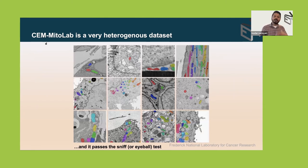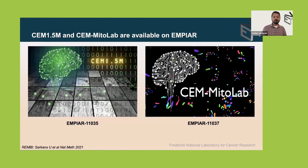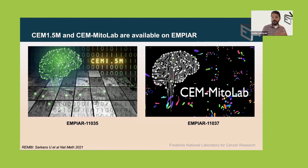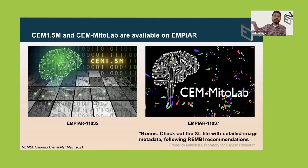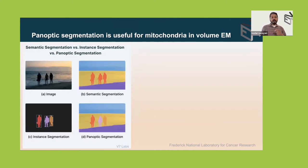These two resources — CEM 1.5F and CEM MitoLab — are open and available for anyone to use on EMPIAR. Please download them and use them for your own approaches. A bonus: the Excel file with CEM MitoLab has detailed metadata, so in the future if you want a subset of mitochondria from liver or only from FIB-SEM imaging, you can do this. Having those kinds of metadata is very important.